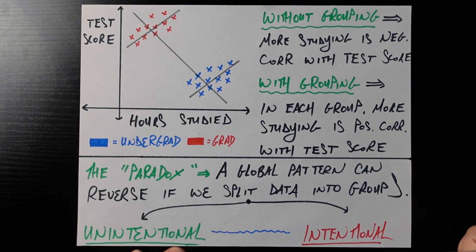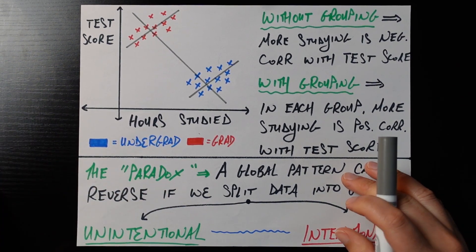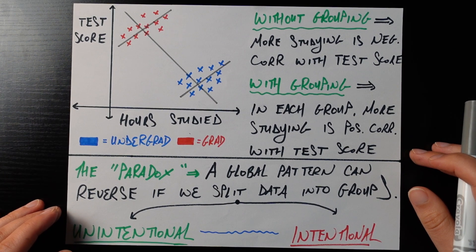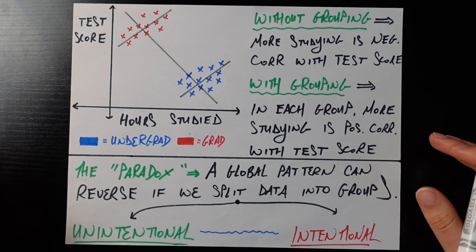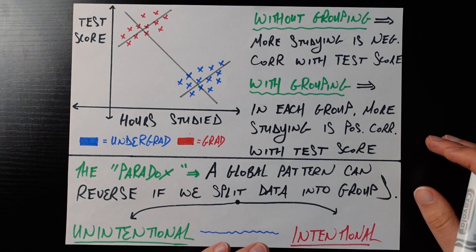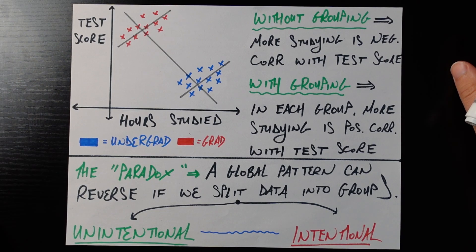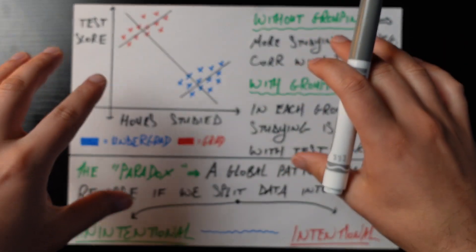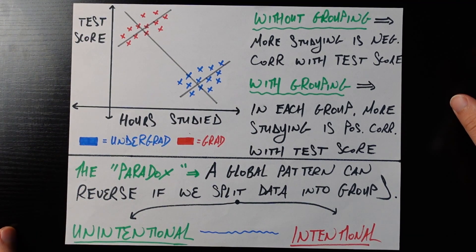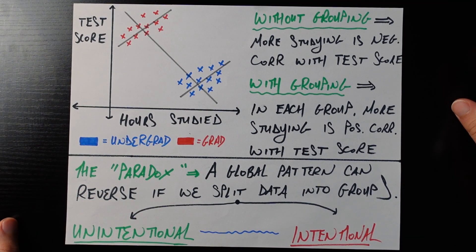And so Simpson's paradox, one of the biggest complaints about it is it's not a paradox at all. That's kind of marketing to some degree. But the paradox is that a global pattern can reverse if we split the data into groups. With the admissions data, we saw that that was the gender bias being in admissions versus applications. Here we see that it's the correlation being positive or negative based on whether we break it up into groups or don't break it up into groups.